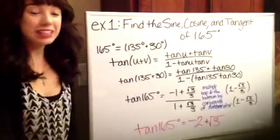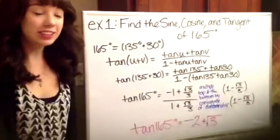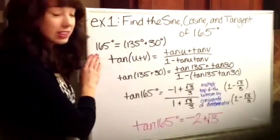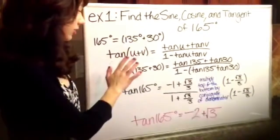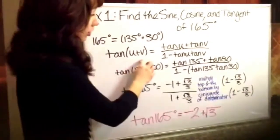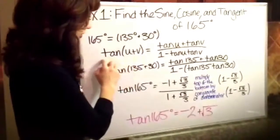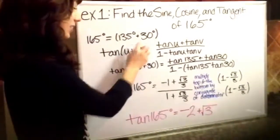So far we've found the sine and the cosine. We still need to find the tangent. So for the tangent, we're still using 165 degrees and I'm still using the two numbers that I found that add up to that that are in the unit circle. So I'm going to plug them in for u and v again into the formula for tangent. And make sure you choose the one that's adding because these are adding.